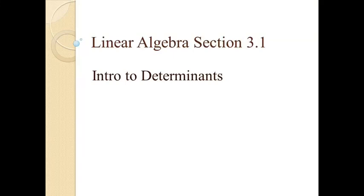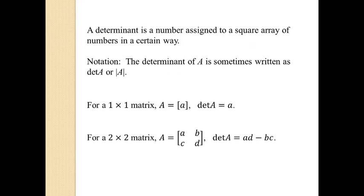This is Catherine Nightingale from Chattanooga State Community College, and this video is for linear algebra section 3.1, which is an introduction to determinants. Let's start by defining a determinant. A determinant is basically just a number assigned to a square array of numbers in a certain way. The first thing to notice is that the matrix has to be square — if it's not a square matrix, then no determinant exists.